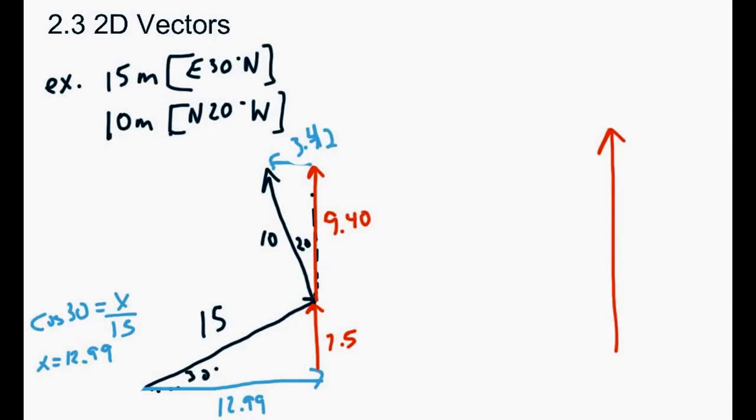It'll be 9.40 plus 7.5, because they're both going upward, so we can add them together. So that would be the same thing as 16.9. And then if you look at the horizontal vectors, we've got 12.99 to the right, but then we have 3.42 going to the left. So because those are in opposite directions, we need to subtract them. So 12.99 minus 3.42 gives us an answer of 9.57 to the right.